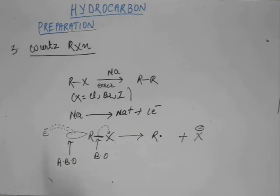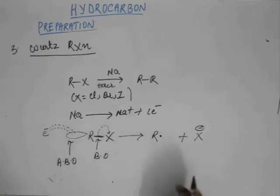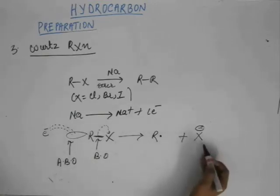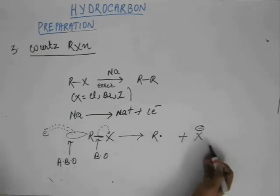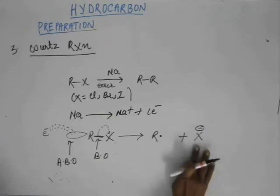What we have is R dot, a free radical, and X minus, a halide ion, and this will be very stable. Chloride, bromide, iodide ions are very stable. This will be a spectator ion, meaning they will not participate in the reaction.